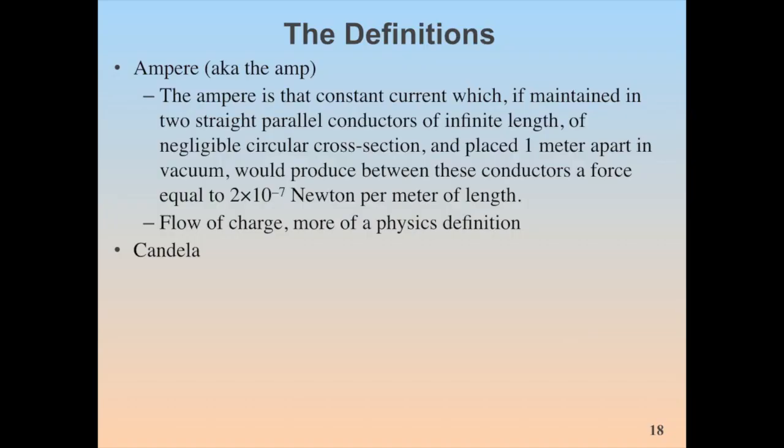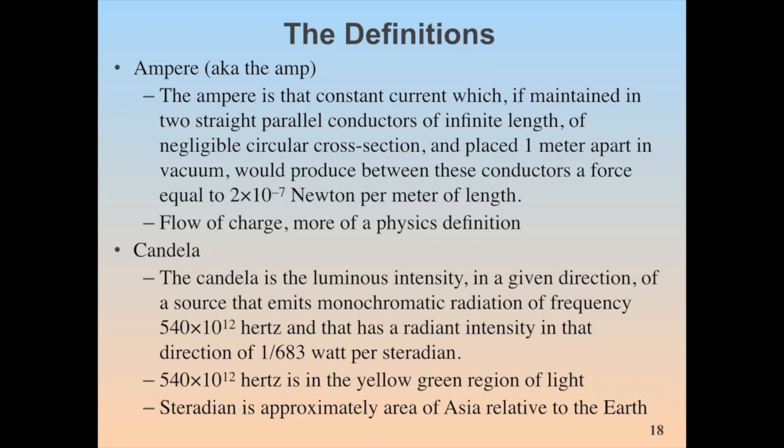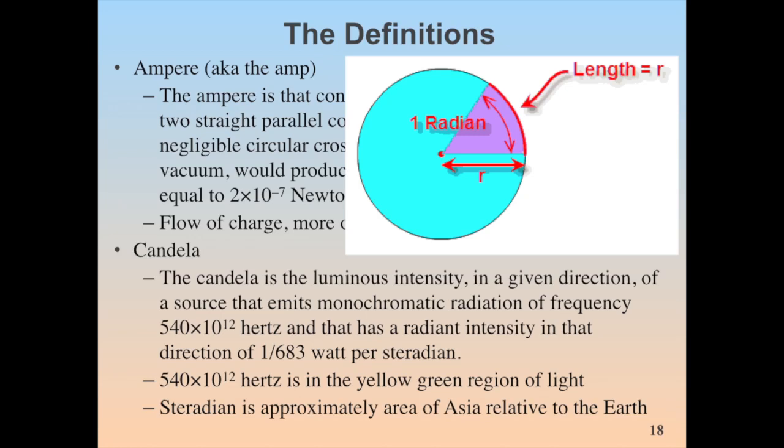And then finally, our last SI unit here is the candela. So the candela is the luminous intensity in a given direction of a source that emits monochromatic radiation of frequency 540 times 10 to the 12th hertz. And that has a radiant intensity in that direction of 1 over 683 watts per steradian. All right, there is a lot of mysterious words in this definition. So let's try to break this down a little bit. 540 times 10 to the 12th hertz. This is yellow-green light. Monochromatic. Mono means one. Chromatic means color. So that literally just means one color of light that has that particular frequency.